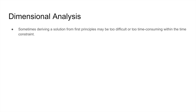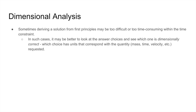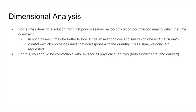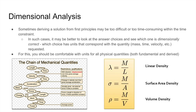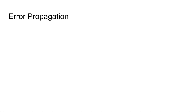Without further ado, let's dive into our content. The first topic is dimensional analysis. Sometimes deriving a solution using physics principles may be too difficult or too time-consuming for the 75 minutes you're given on the test. In these cases it's better to look at the answer choices and see which one dimensionally makes sense — in other words, which choice has the units that correspond with the quantity requested. You should be comfortable with the units of all physical quantities like length, velocity, acceleration, force, work, and power, in addition to linear density, surface area density, and volume density.